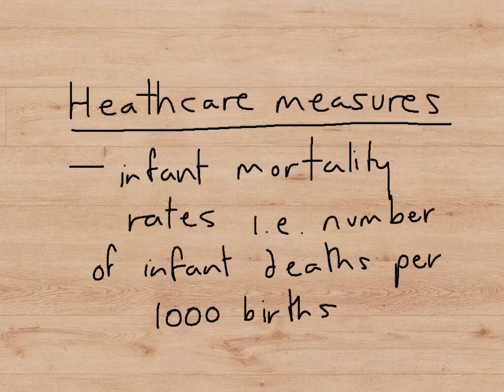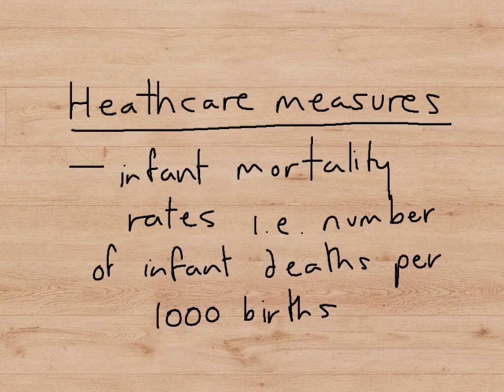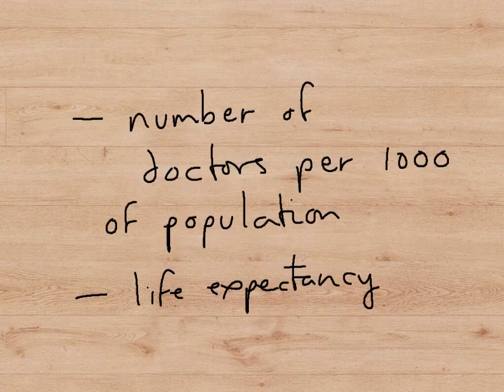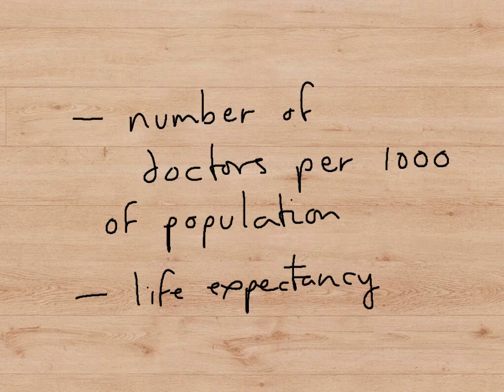So what are the health care measures used in calculating a country's HDI? They include things like infant mortality rates — that is the number of children below the age of one who die per 1,000 births. So if 100 children died before reaching the age of one per 1,000 births, that would be an infant mortality rate of 10%. Another measure is the number of doctors per 1,000 of the population, as well as life expectancy.